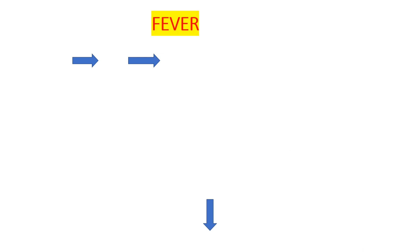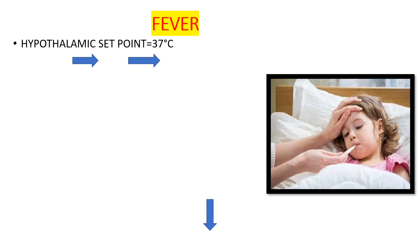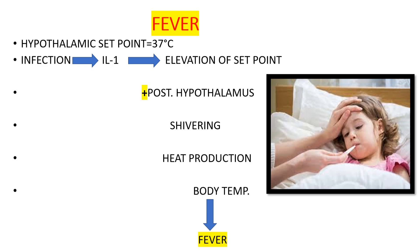Regarding fever: the hypothalamic set point is normally 37 degrees Celsius. During infection, various inflammatory mediators such as interleukin-1 are produced. This results in elevation of the hypothalamic set point, which drives the fever response.